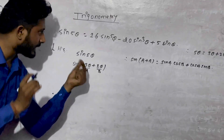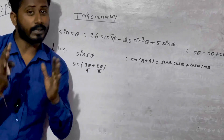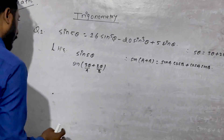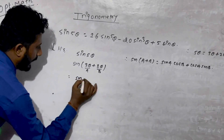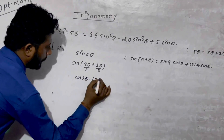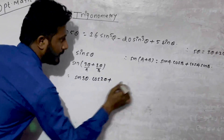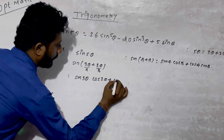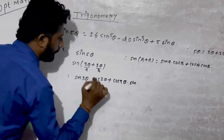Over here, where A is, there is 3θ, and where B is, there is 2θ. So sin A is sin(3θ) into cos B, which is cos(2θ), plus cos A, which is cos(3θ), into sin B.